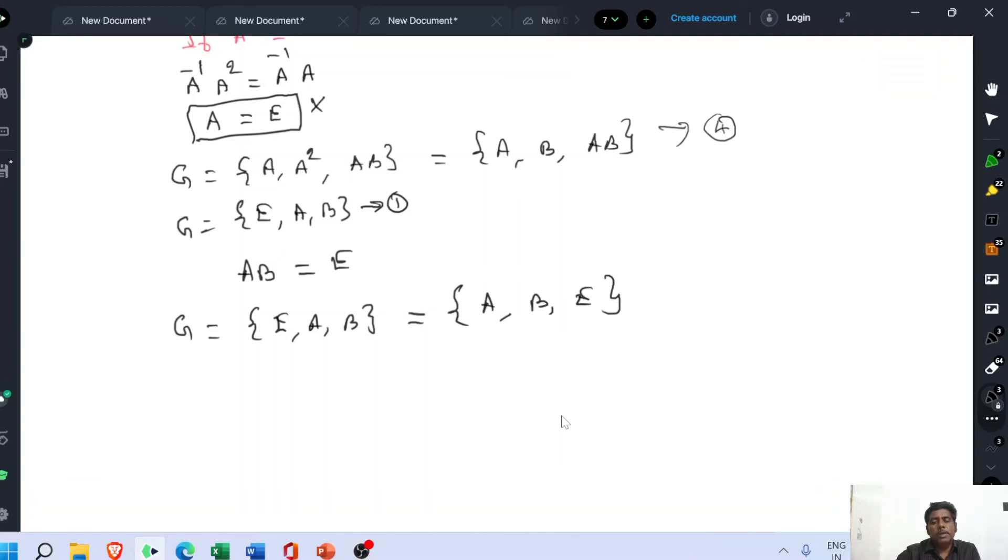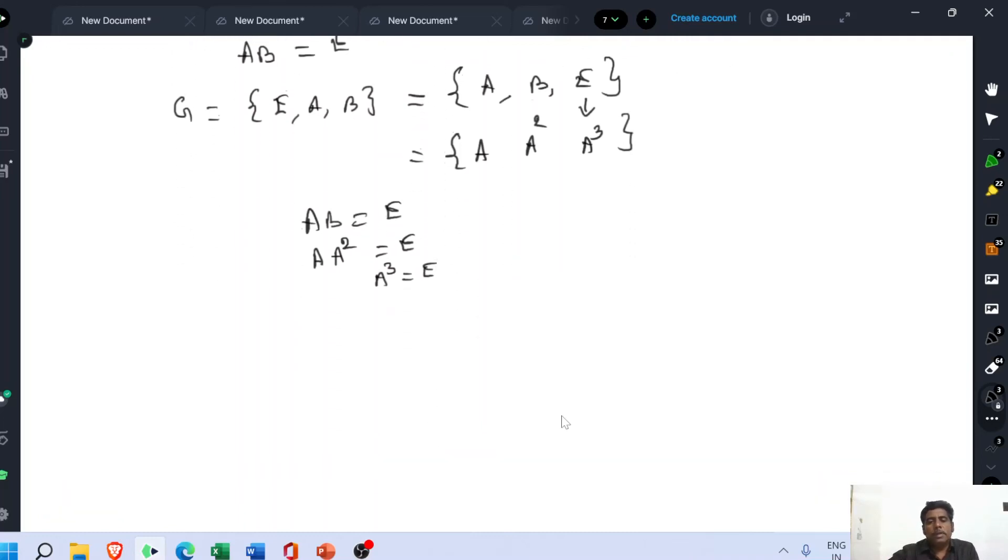Now we have to prove that E equal to A cube. How do you say E equal to A cube? What is the value of E? AB equal to E. Then the value of B is A square. Already we have proved that the value of B is A square. Therefore, A cube is equal to E. Then the given group G equal to E, A, B is modified as A, A square, A cube is equal to E.